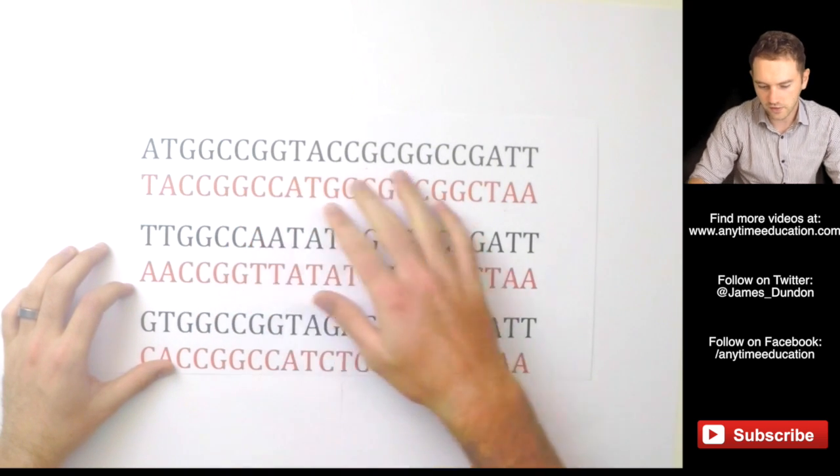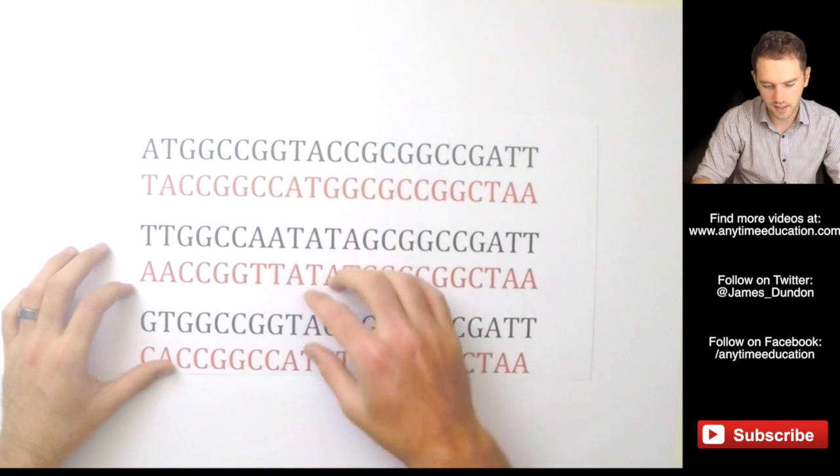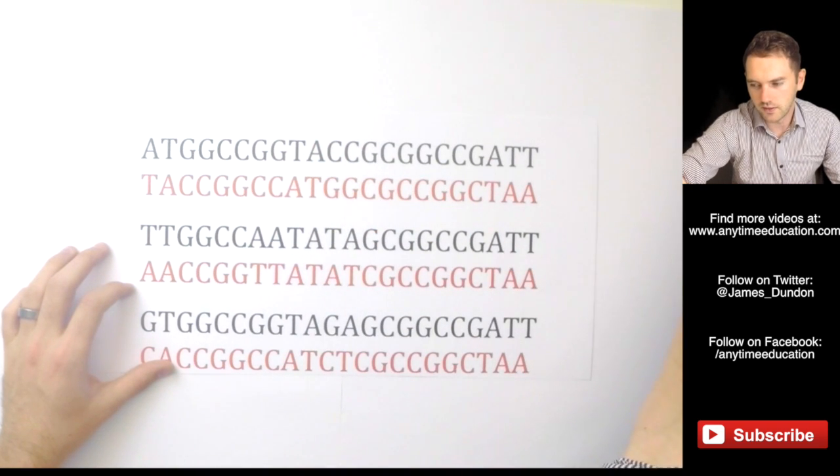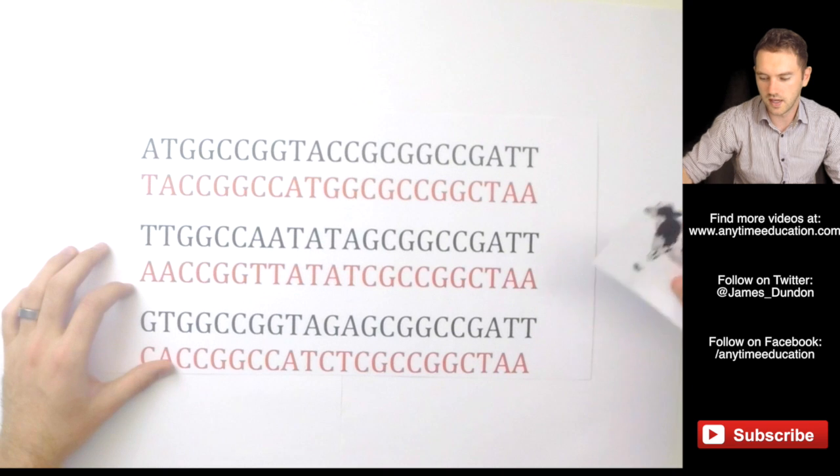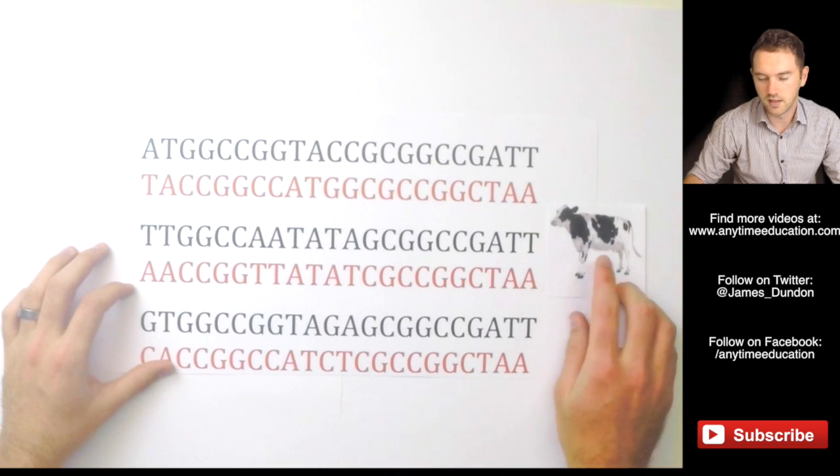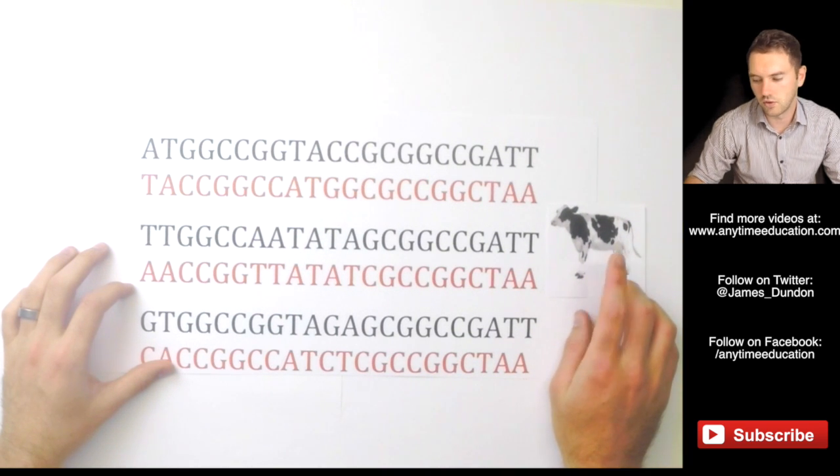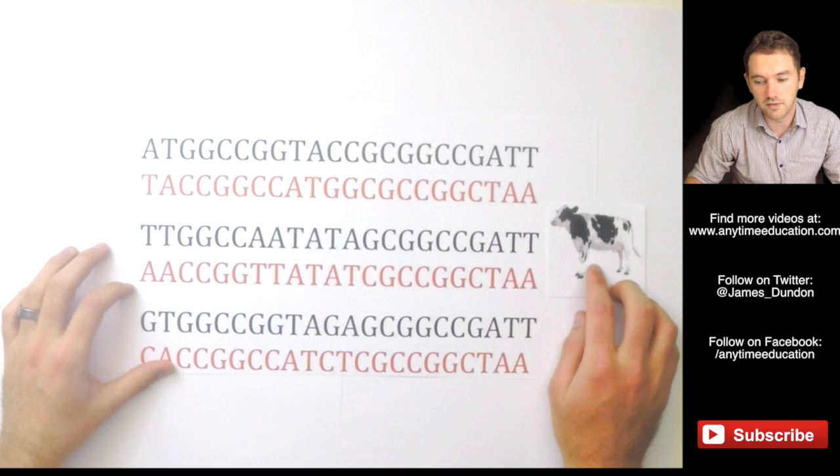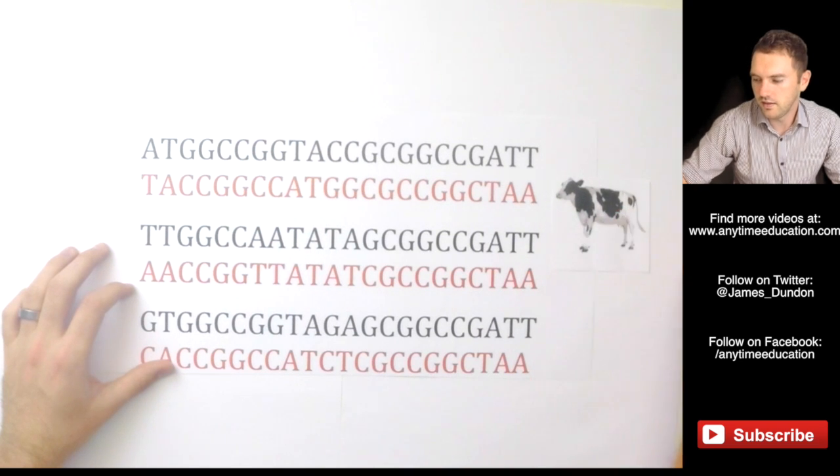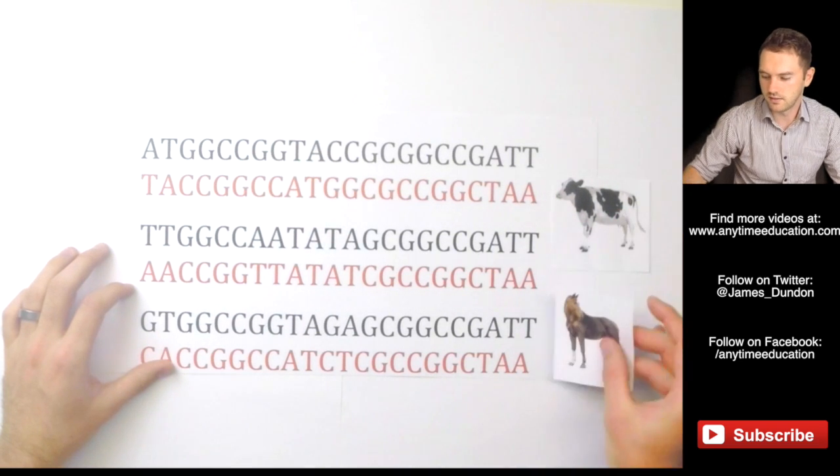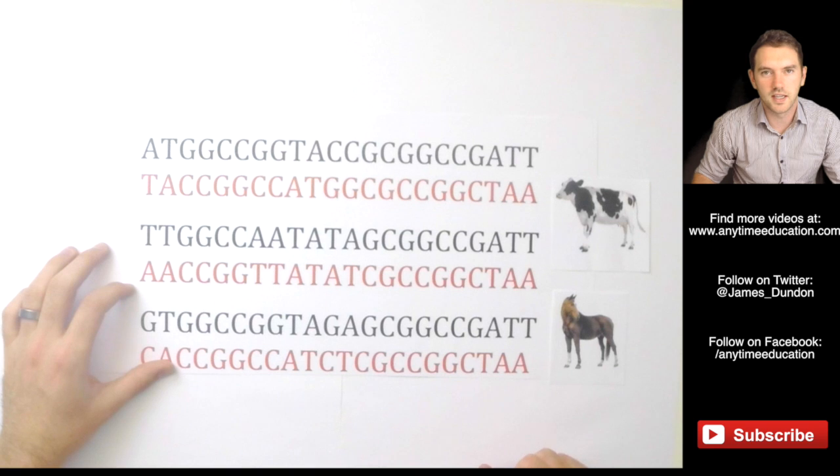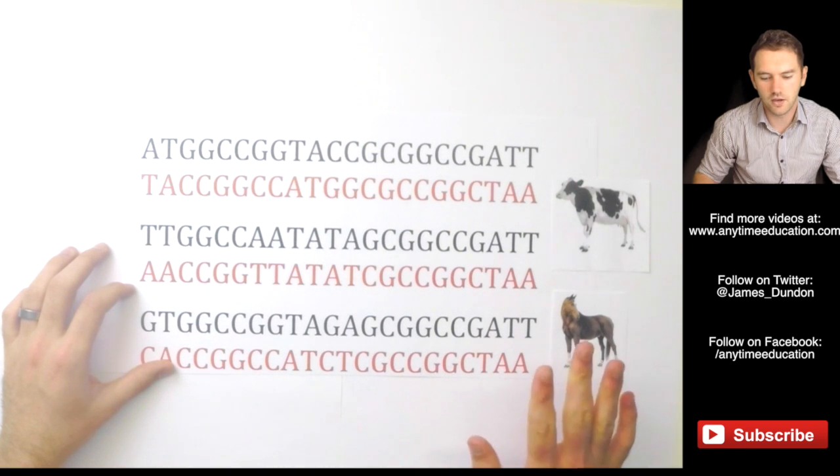So this is a very small sequence, double-stranded, it's got three lines. So what we want to know is, does this sample contain just cow DNA or, you know, is it just beef mince or is there additionally some horse DNA in there? That's our ultimate question.